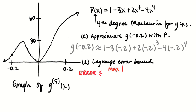The next derivative — since I used a fourth degree Maclaurin polynomial for g(x) — is the absolute value of g's fifth derivative. I divide by 5!, then take the absolute value of (x − centering value) to the fifth power.